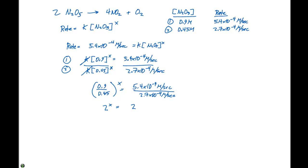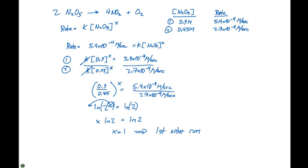Some of the time it's not gonna be quite that easy, so what we can do is take the natural log of both sides. When we do that, we can bring the exponent down front, so we can say that x times the ln of 2 is gonna equal the ln of 2. From this, x is gonna equal 1, which tells us that we have a first order reaction. We can then write the rate law as the rate is equal to K times the concentration of N₂O₅ to the first power — this is our particular rate expression.